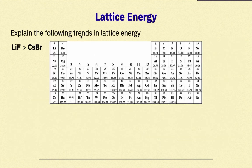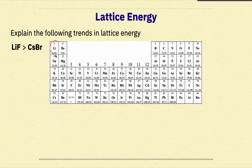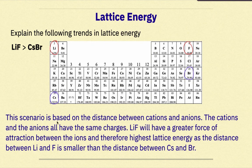Explaining the next trend: lithium fluoride has greater lattice energy than cesium bromide. Lithium and fluorine are both located in period 2, while cesium is in period 6 and bromine is in period 4. This scenario is based on distance between cations and anions — all ions have the same charges. LiF has a greater force of attraction and therefore higher lattice energy, as the distance between Li and F is smaller than the distance between Cs and Br.